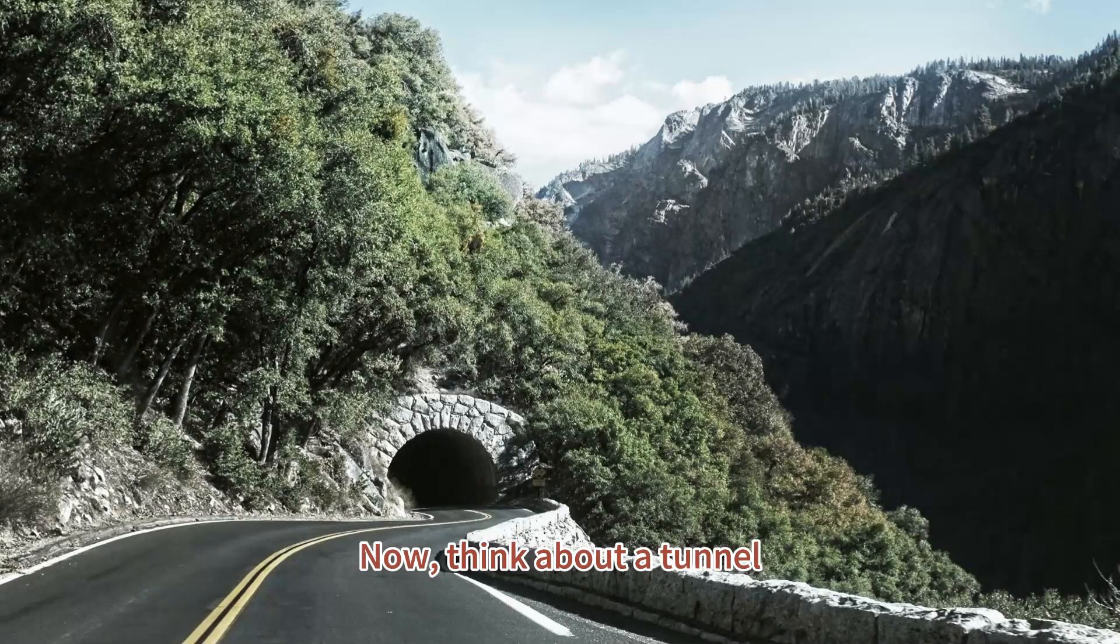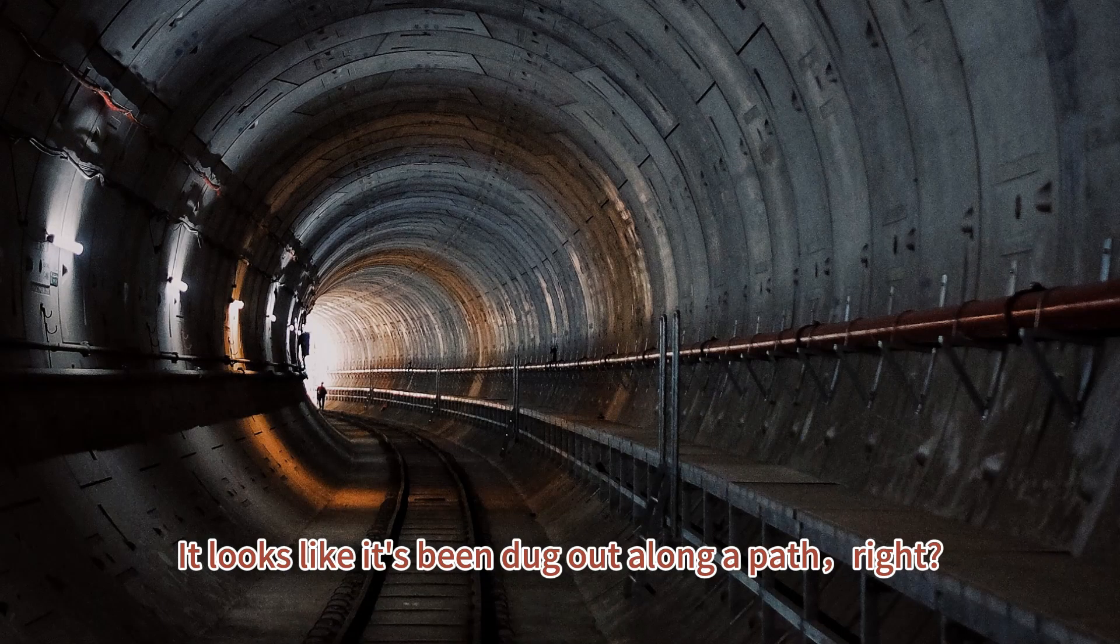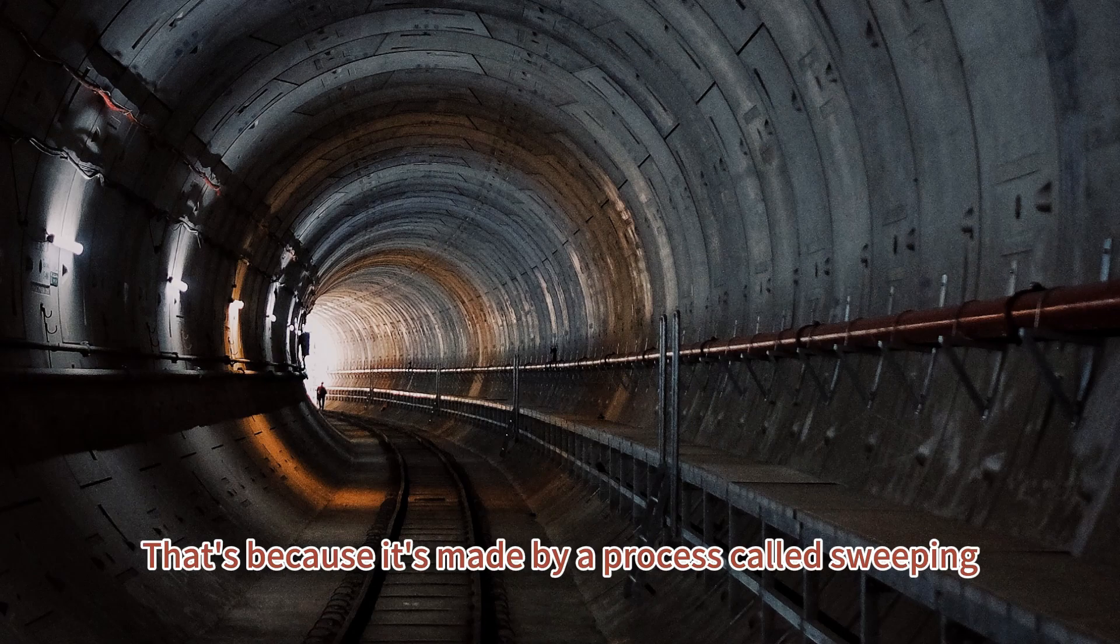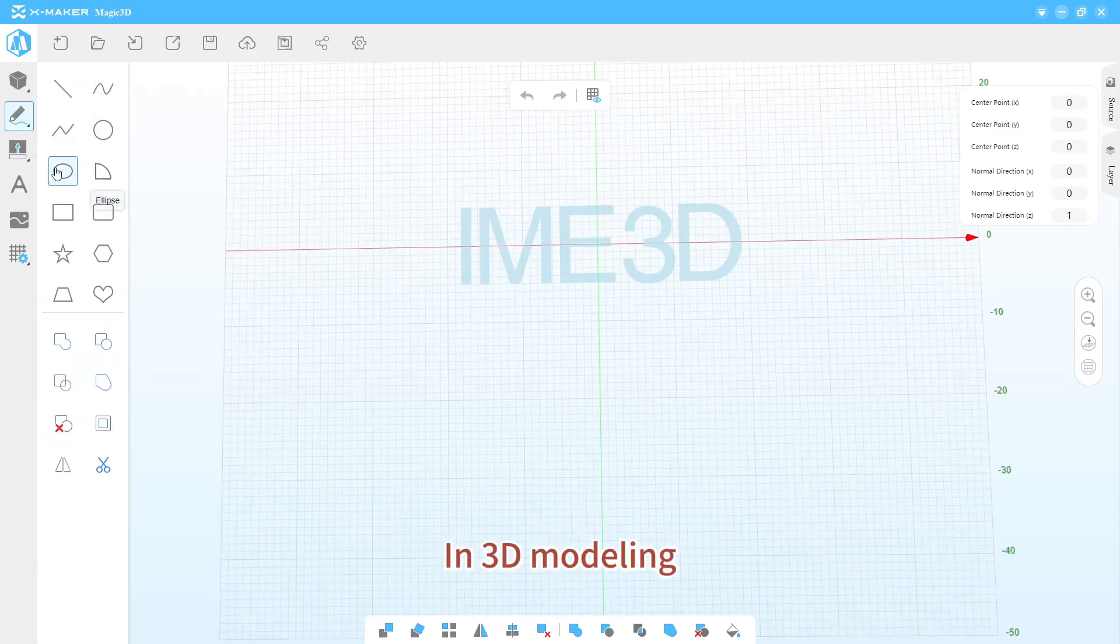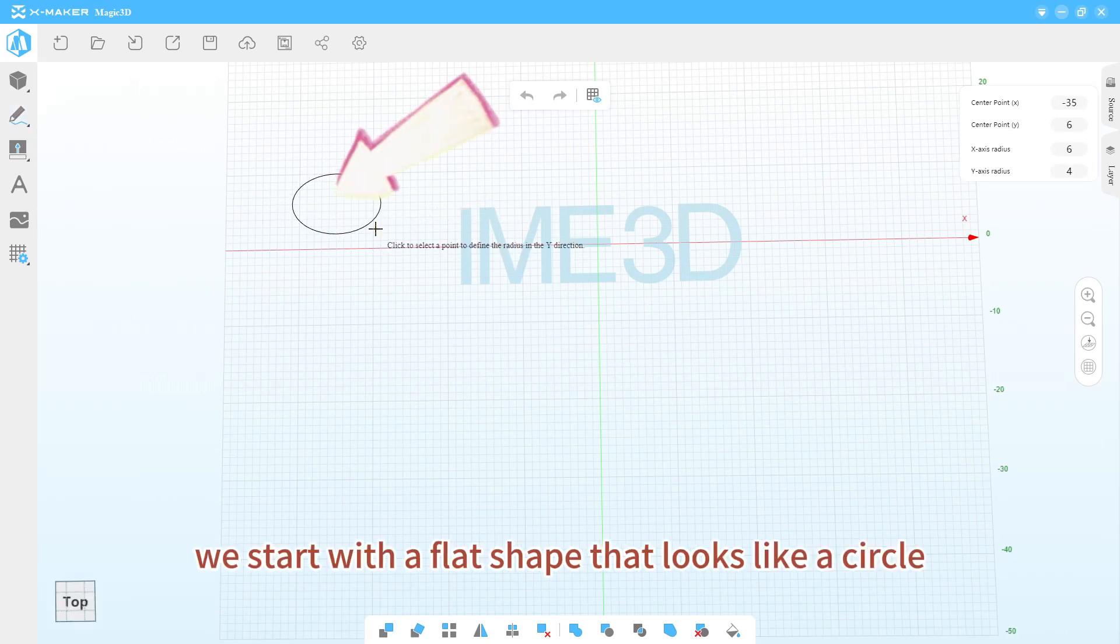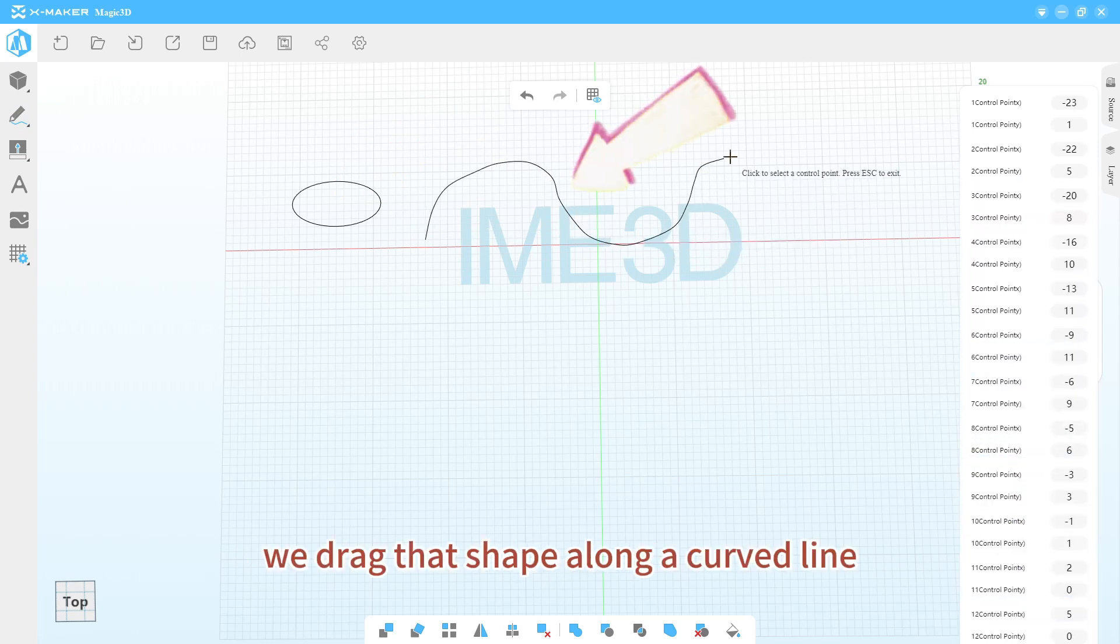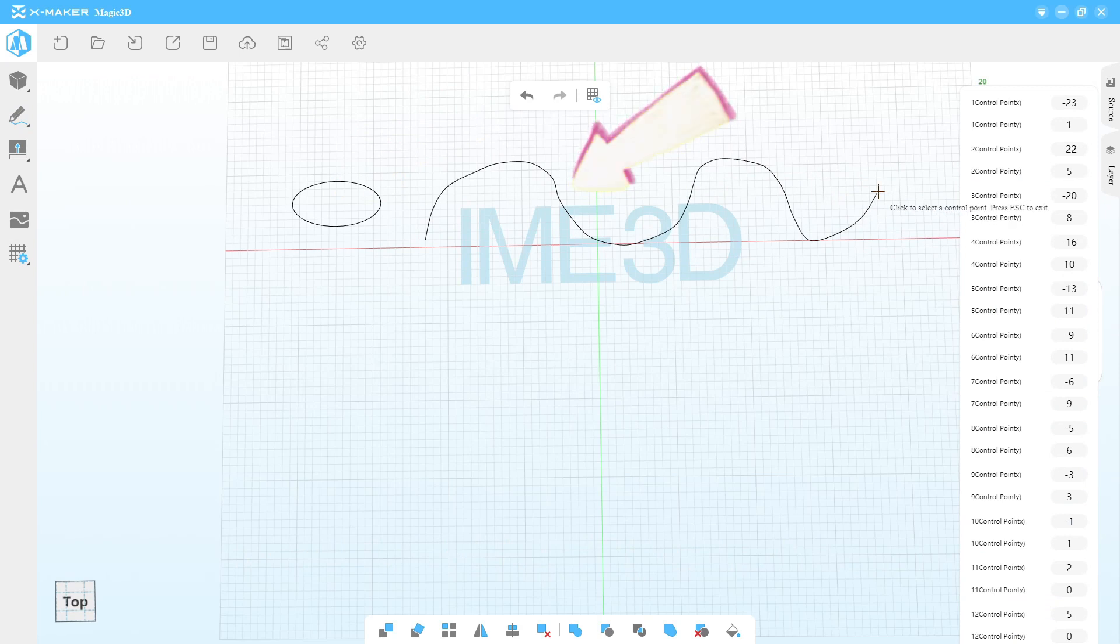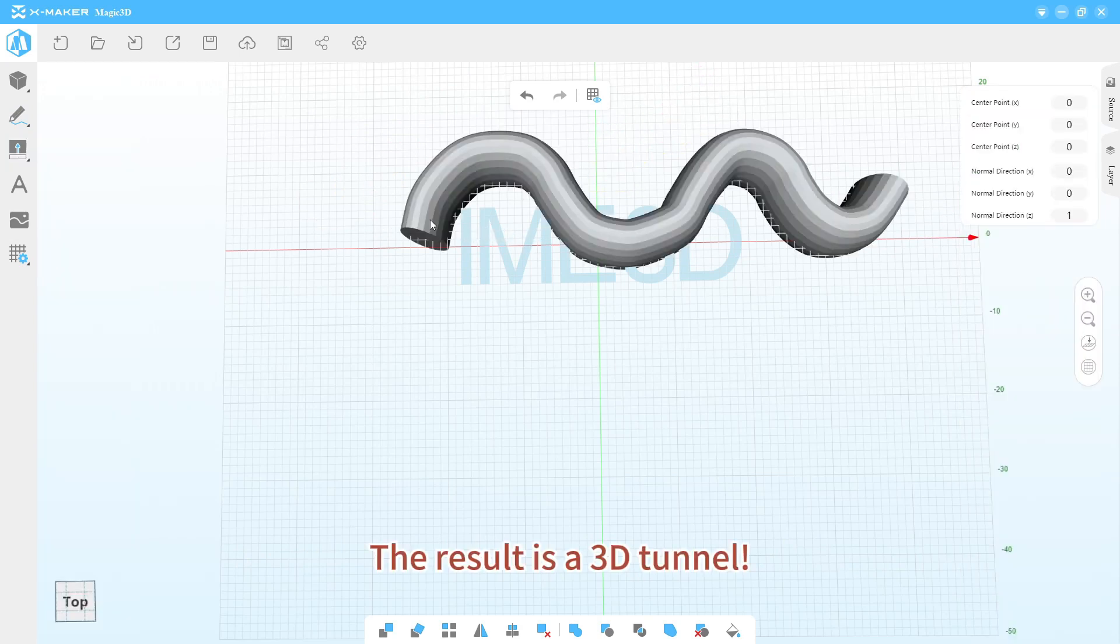Now think about the tunnel. It looks like it's been dug out along a path, right? That's because it's made by a process called swiping. In 3D modeling, we start with a flat shape that looks like a circle, the cross section of the tunnel. Then we drag that shape along a curved line, the path. The result is a 3D tunnel.